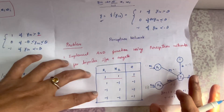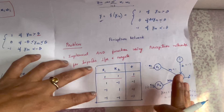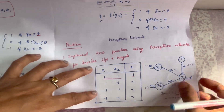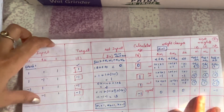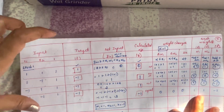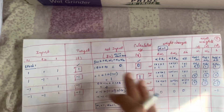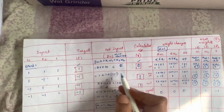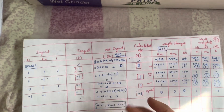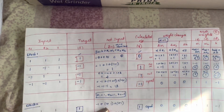This is how you solve the Perceptron Network problem. First draw the truth table, then draw the diagram, and then fill in the tabular column, which makes it easier to calculate the answers correctly and rectify any errors. Thank you all for watching this video.